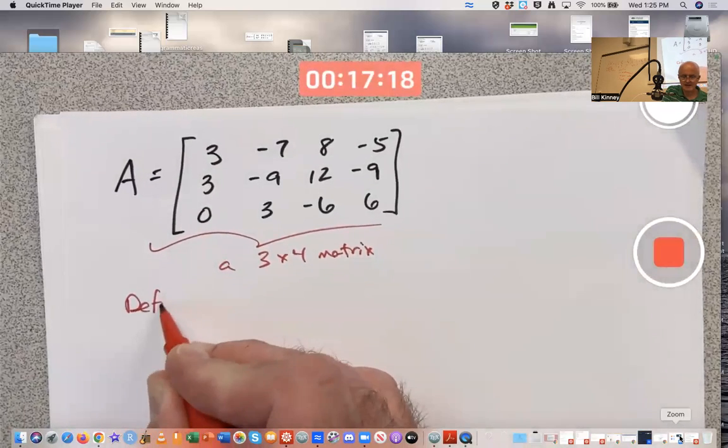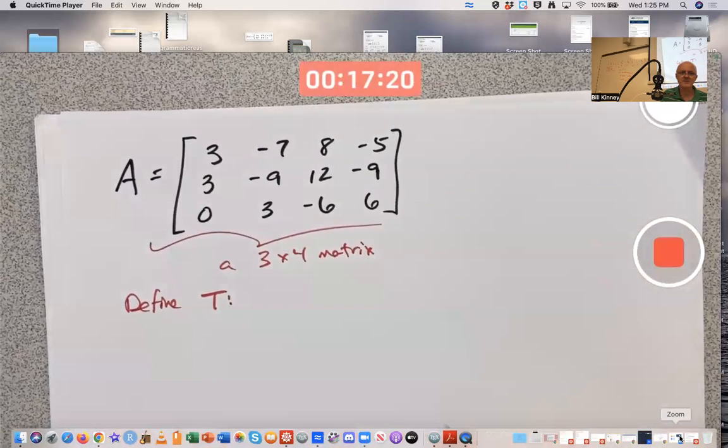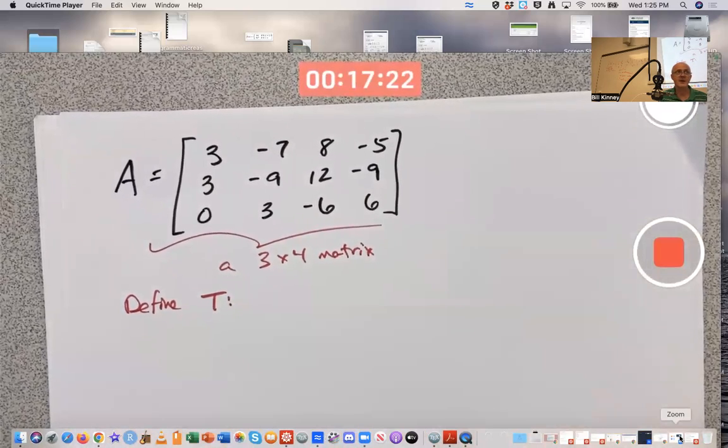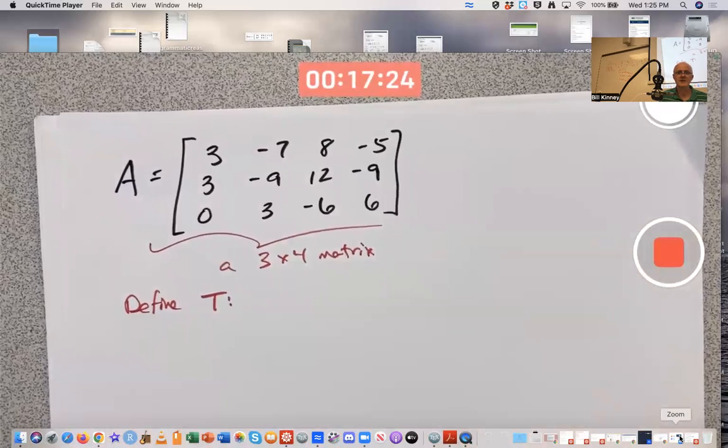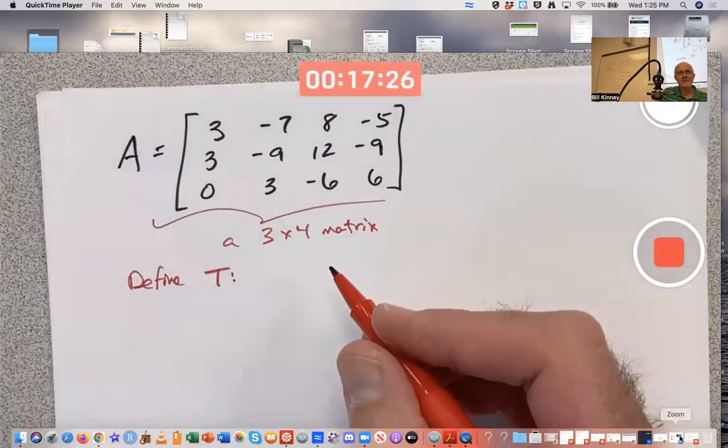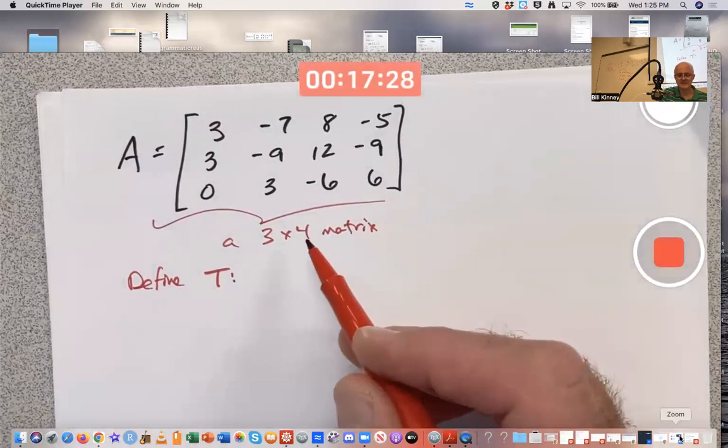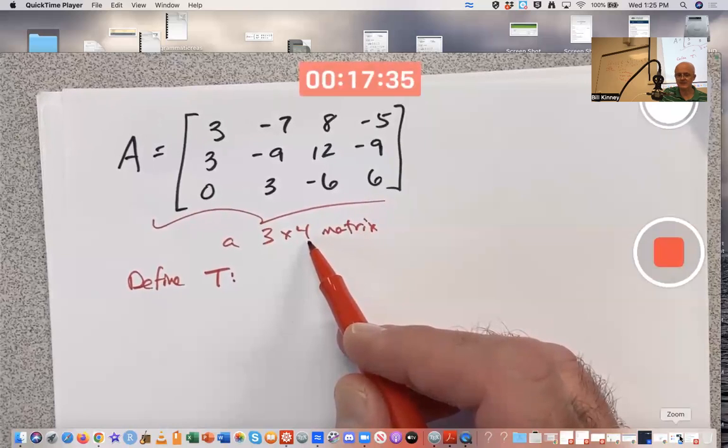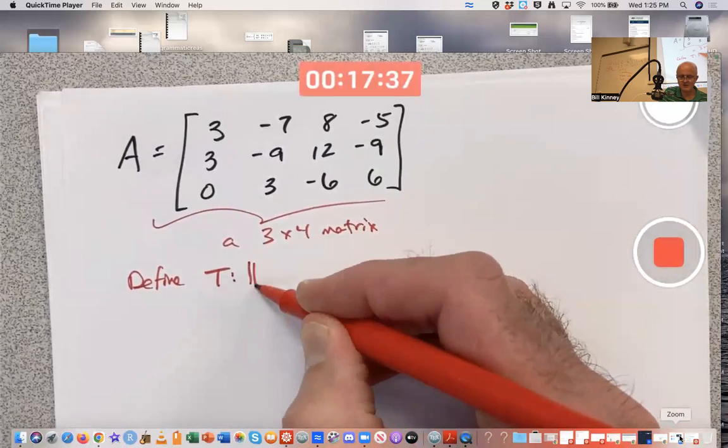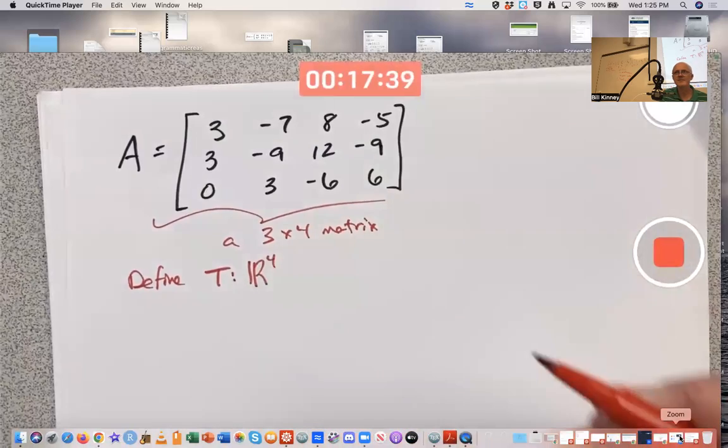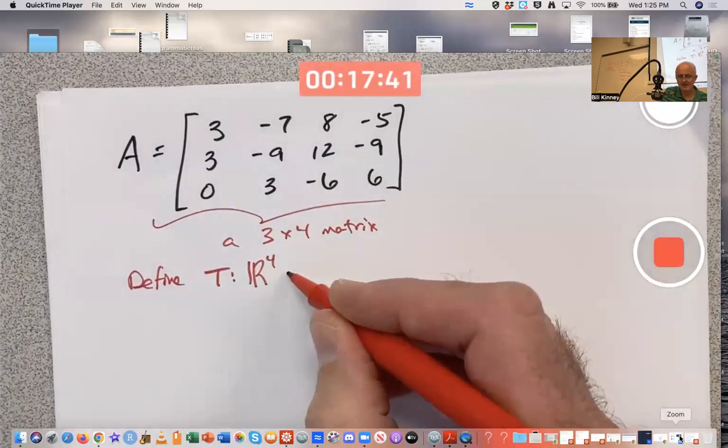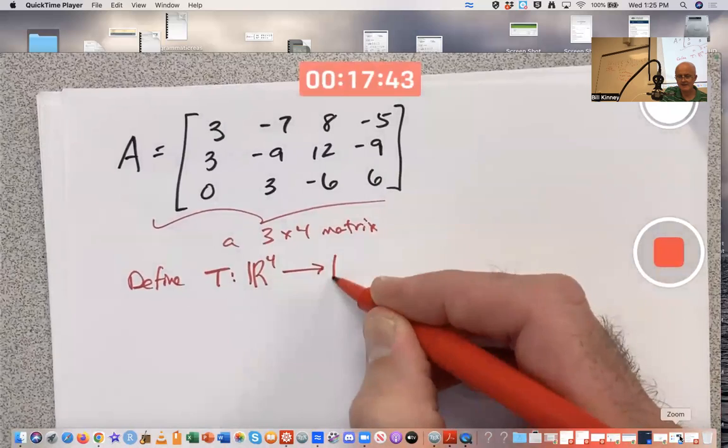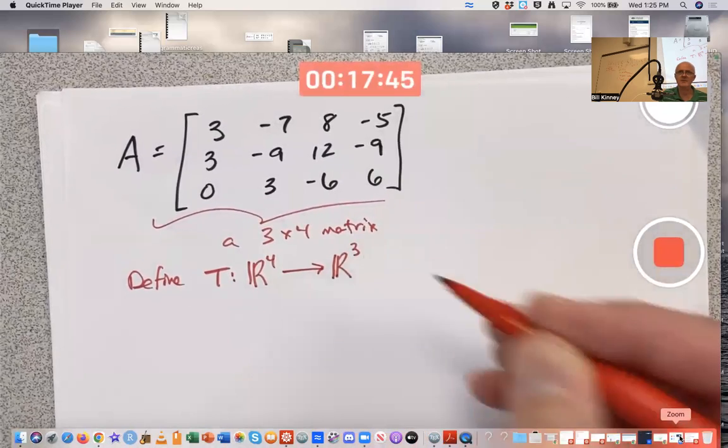We're going to define a linear transformation, which is a function. With a matrix like this, three rows and four columns, the domain of the linear transformation has to be four-dimensional, the number of columns. And the codomain has to be three-dimensional, the number of rows.